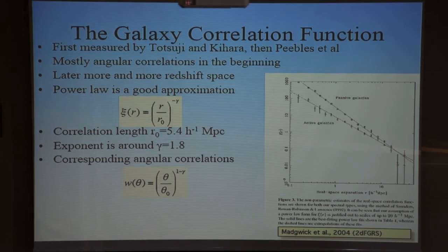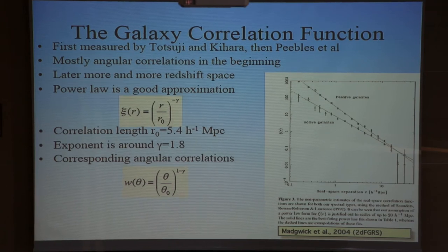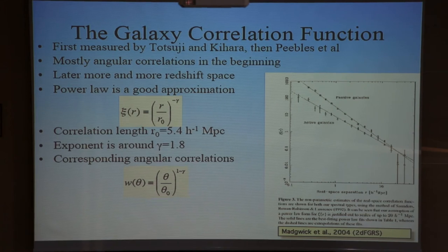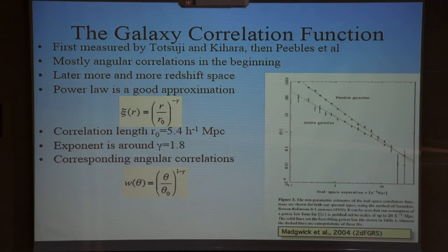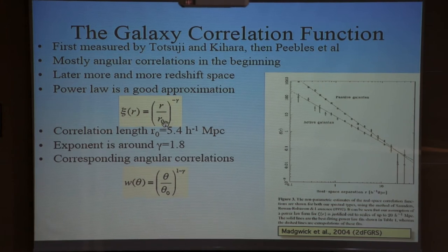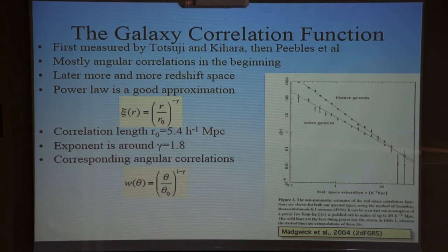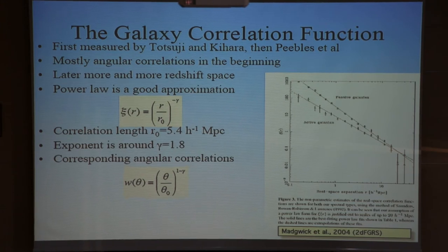When you do this, you reproduce to a given extent the very first calculation of Totsuhi and Kihara, which was repeated only five years later without knowledge of the Japanese results by Jim Peebles. The standard fit of the correlation function is a power law with an exponent of roughly 1.8, and what is called a correlation length of about 5-6 h-inverse megaparsecs. This is actually a misleading name - all it means is that at this distance, the correlation function equals one, so the probability of having a neighbor is twice that expected for a random distribution.